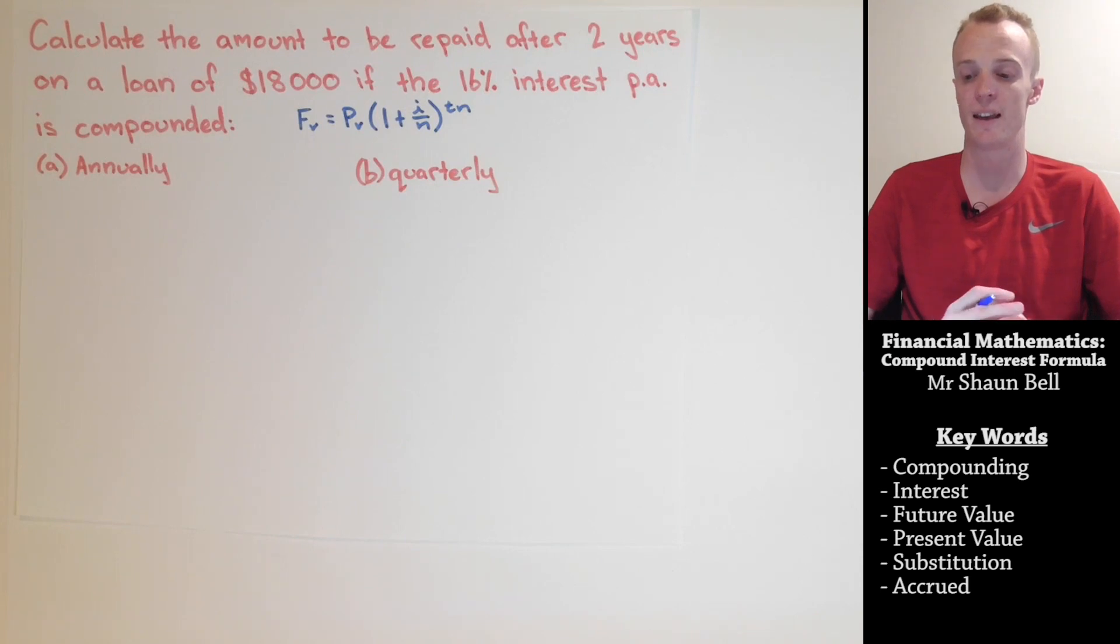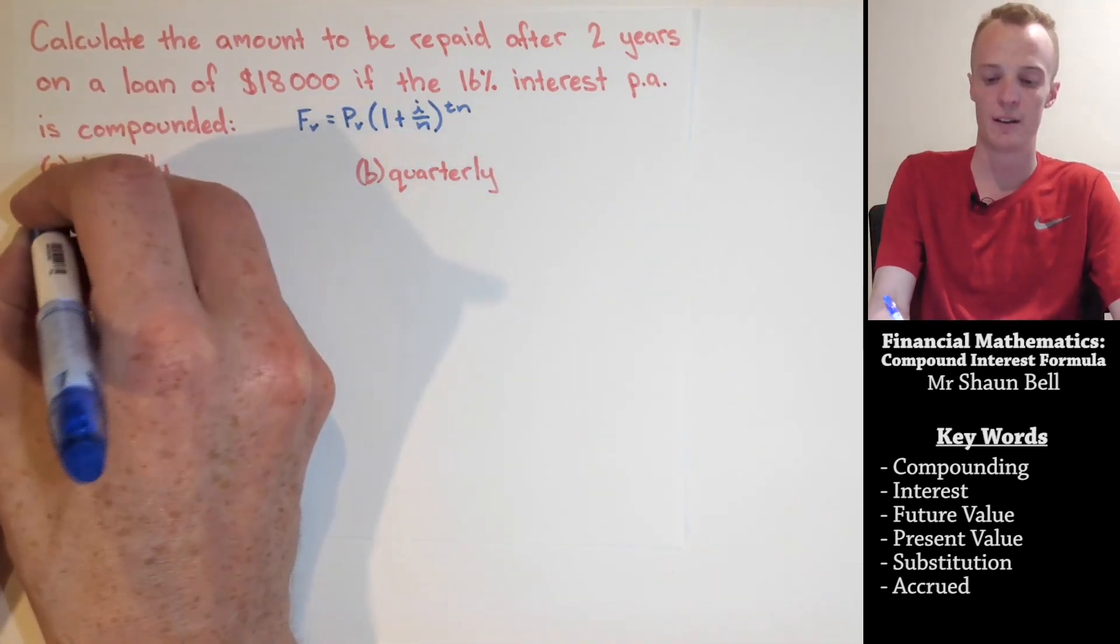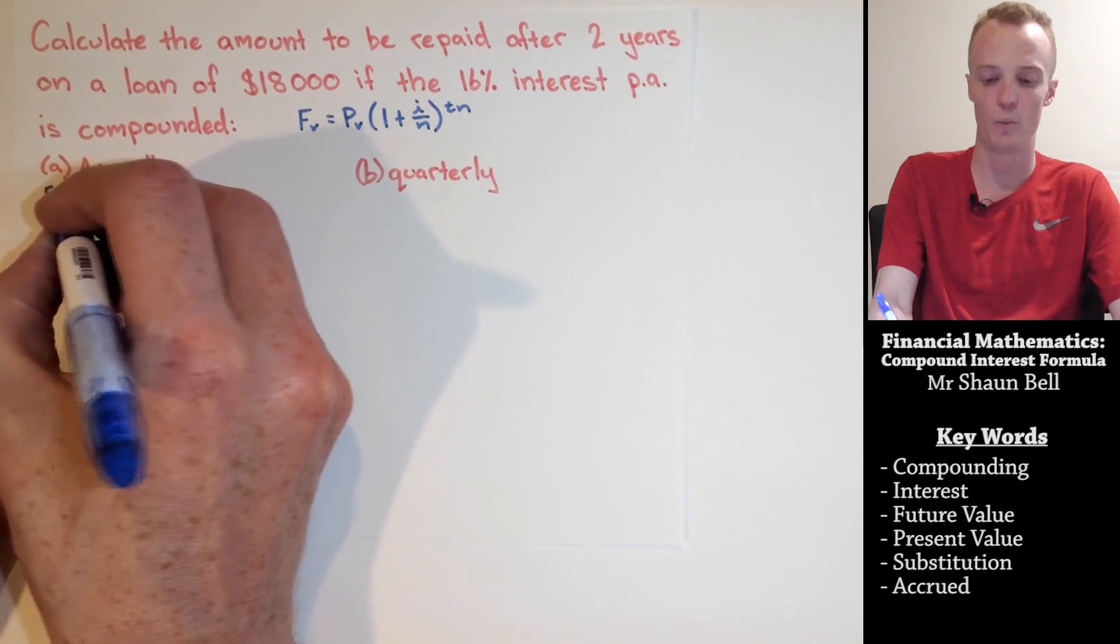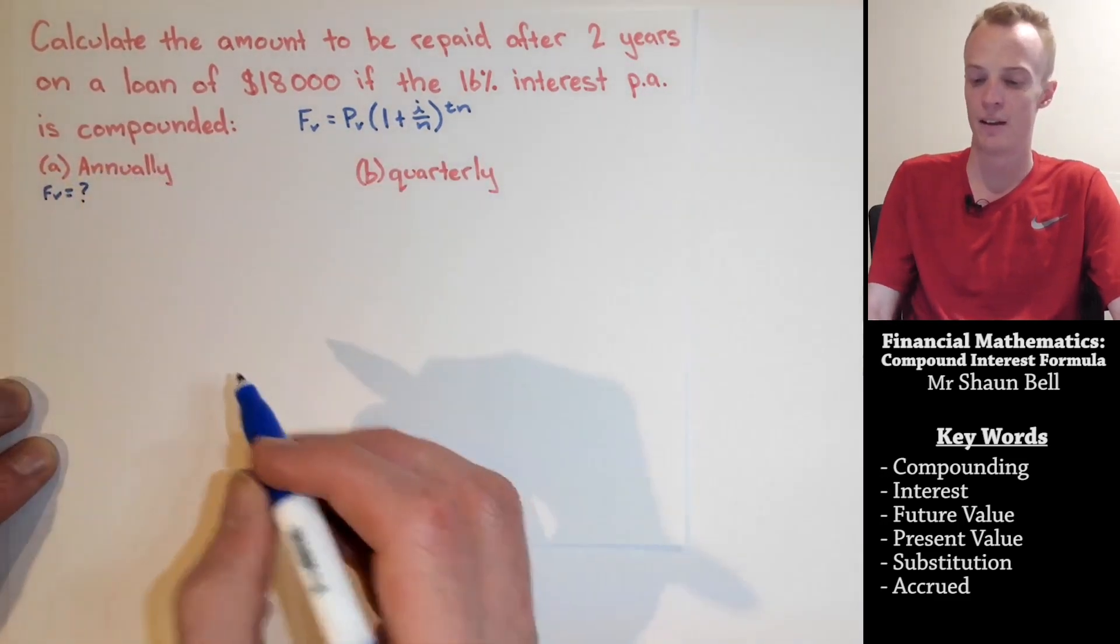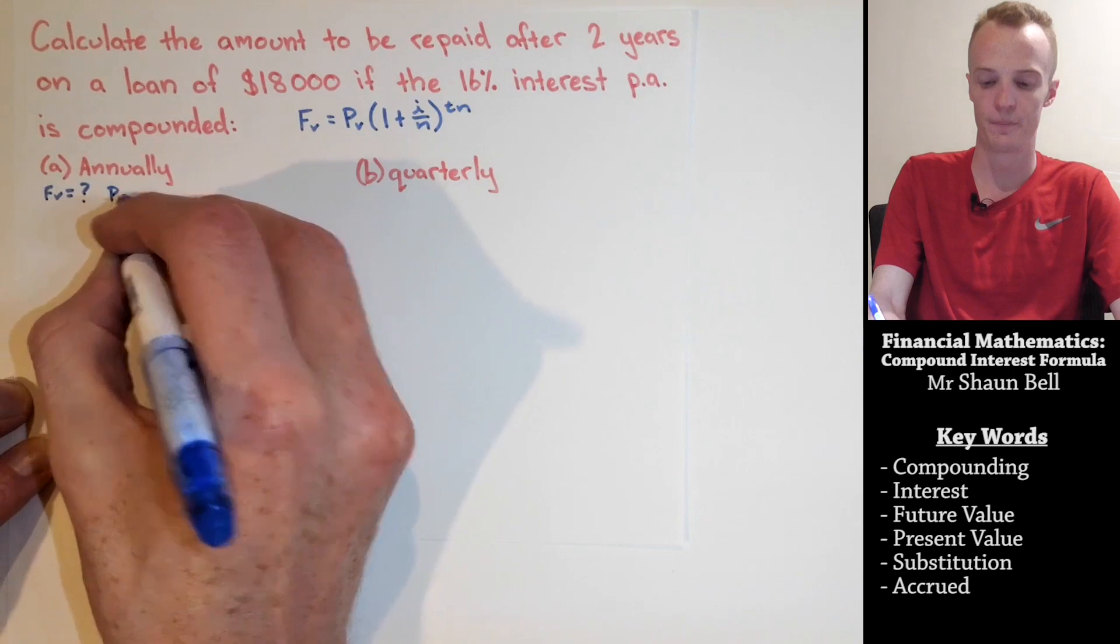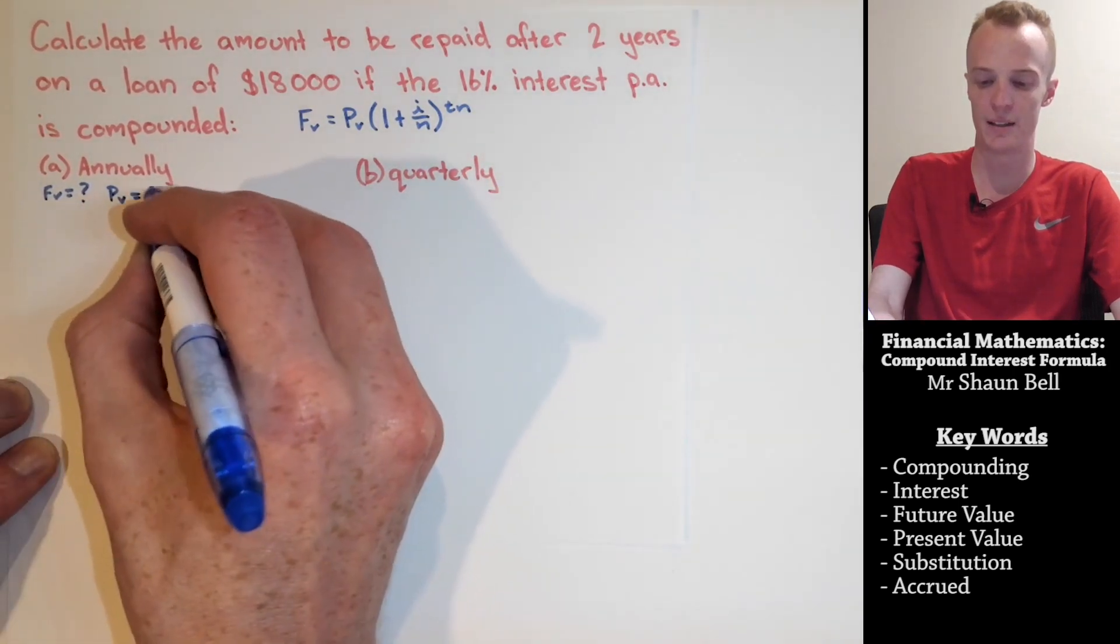So now we know how to calculate the n value in our formula, let's use this formula now with a question, where it says, calculate the amount to be repaid after two years on a loan of $18,000 if the 16% interest per annum is compounded either annually or quarterly. Now whenever doing these problems, I like to start by identifying what information we have. So, the future value, we're looking for that, so we don't have that. The present value is equal to $18,000.